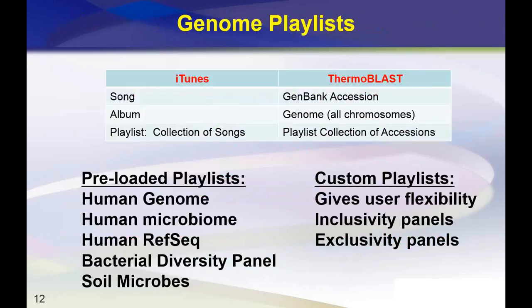The best analogy for genome playlists is iTunes. The smallest unit in iTunes is a single song; in ThermoBlast, that's a single GenBank accession containing one DNA or RNA sequence. A small collection of songs is an album; in ThermoBlast, that's a genome — for example, the human genome combining all 22 autosomes plus X and Y chromosomes. A playlist in iTunes is a collection of songs and albums; similarly, ThermoBlast playlists are collections of accessions or other playlists.